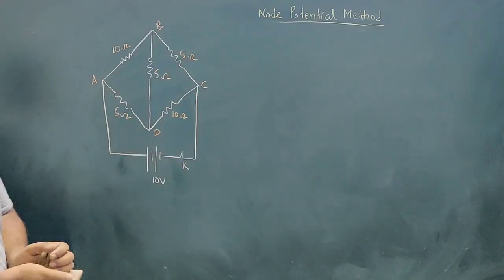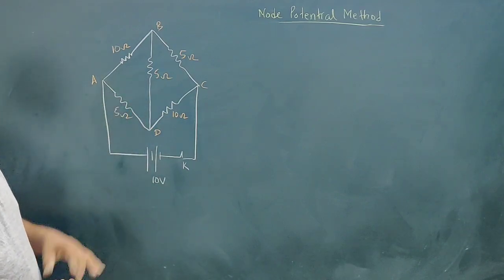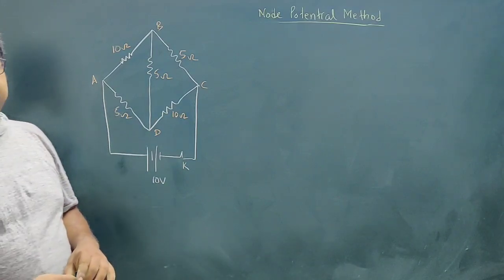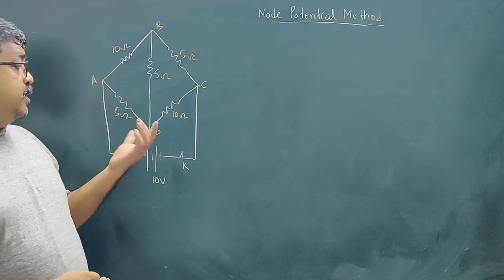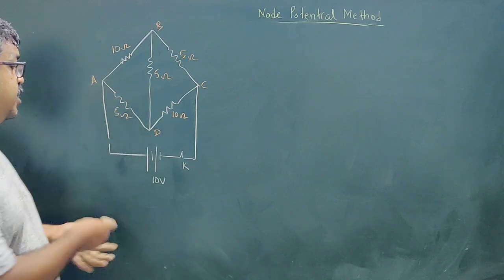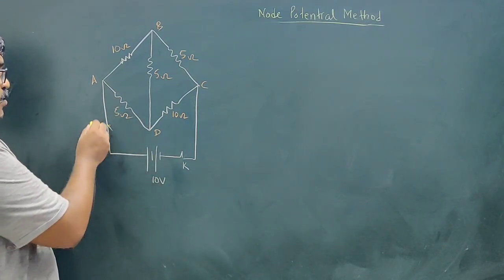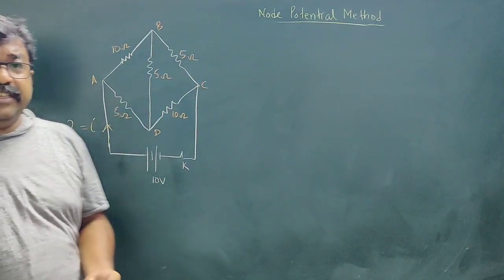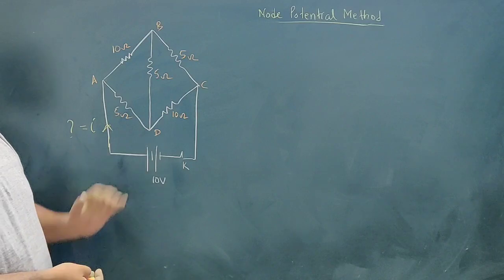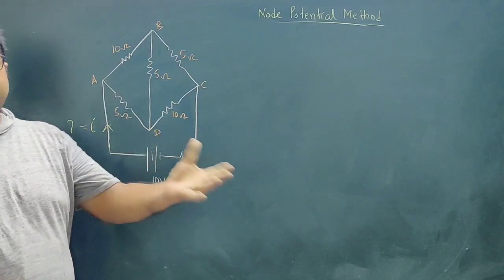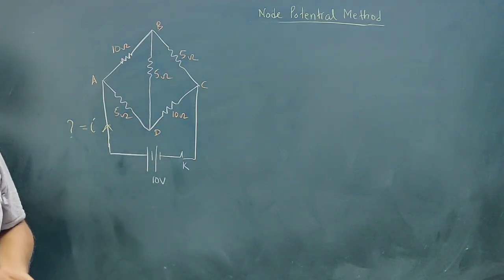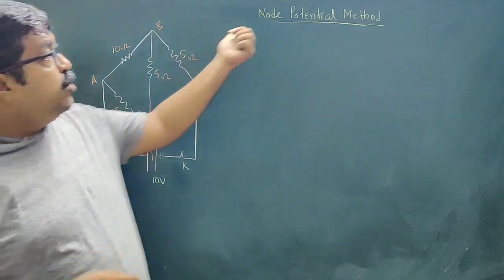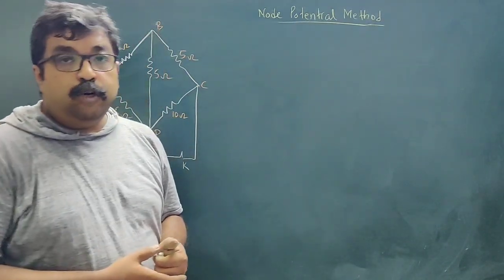Now here we have a circuit that looks like a Wheatstone bridge, but it is not balanced. This circuit is given in your NCERT textbook, and it is asked: what is the net current supplied by the battery, and what is the equivalent resistance? In NCERT and for board examinations you have to solve this using Kirchhoff's rule, but here we are going to use the node potential method.